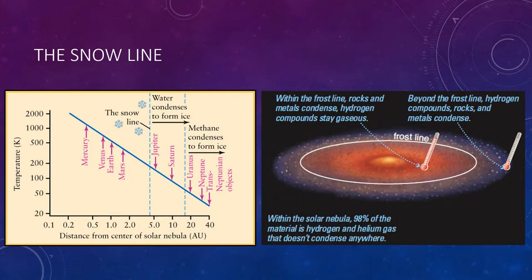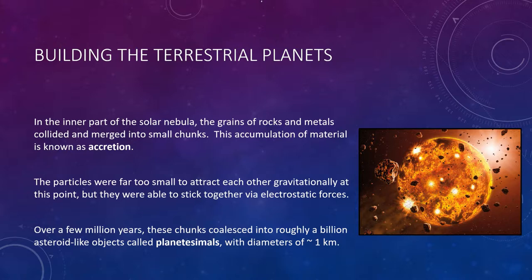Terrestrial planets formed inside the snow line, where the low abundance of solid dust grains kept the planets small. The Jovian planets formed beyond the snow line, where solids of ice, water, methane, and ammonia added their masses to build larger cores and attract surrounding gas. The reason we have two distinct classes of planets is simply because of temperature—the condensation temperature of water and other gases.